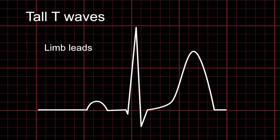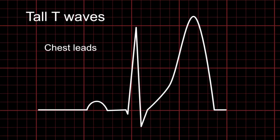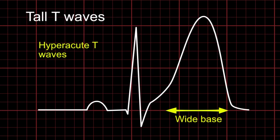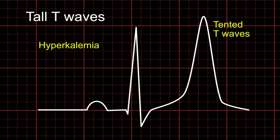Now coming to abnormalities. First one is the tall T waves. Since we know what's a normal T wave, any T wave that's more than 6 mm of amplitude in limb leads or more than 10 mm of amplitude in chest leads are going to be abnormal. It can be tall with wide base, which is known as hyperacute T waves seen in early coronary artery occlusion, or it can be tall and tented like in the case of hyperkalemia.